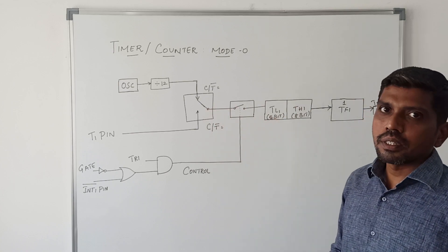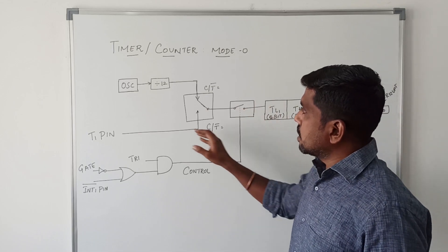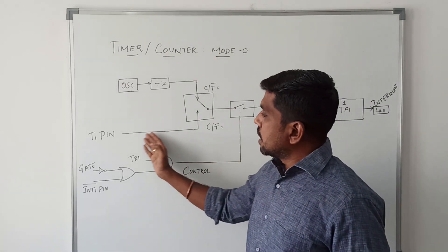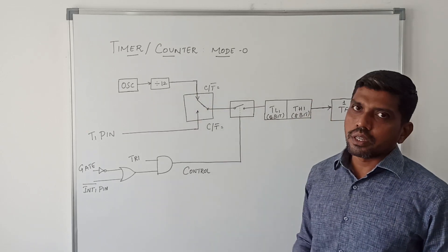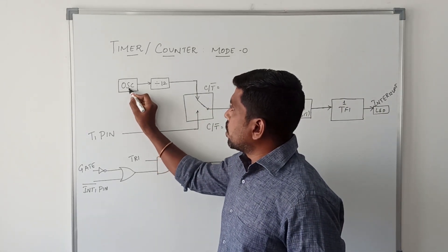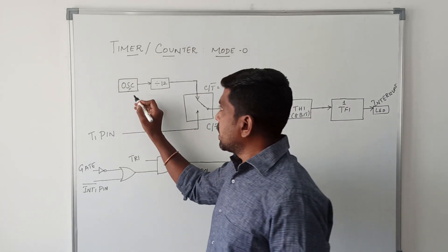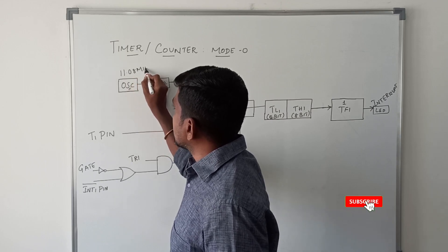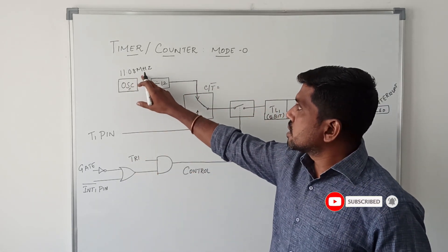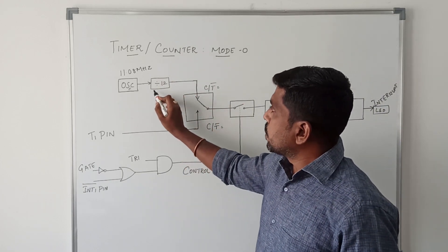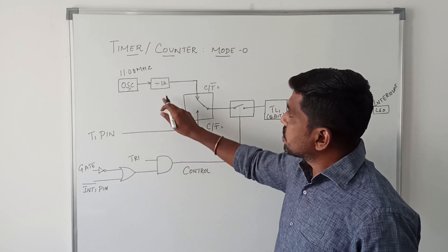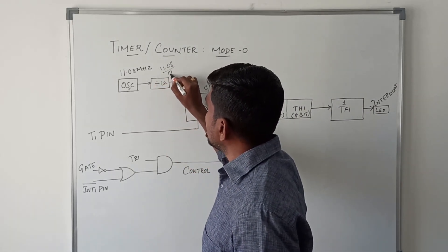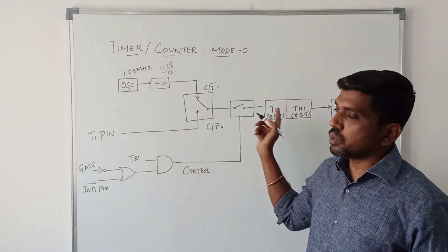Now I attend to the today's session topic: timer counter circuit operating in Mode Zero function. This is a simple circuit of Mode Zero function. This circuit involves different blocks like the oscillator block, frequency divider, Timer 1, Timer 1 flag, and enabling cycles. The oscillator block is mainly used to generate the clock frequency in the 8051 microcontroller. The oscillator circuit generates a clock frequency of 11.08 MHz. Since this full frequency is not supported by the timer cycles, we use a block called the frequency divider, which divides the frequency by 12. So 11.08 divided by 12 gives you the divided frequency, and that frequency is passed to the timer cycles.